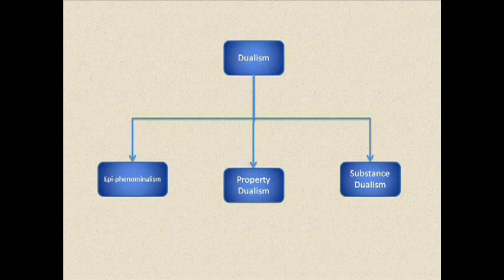Substance dualism is the idea that there's a mental substance, and it's a totally separate thing from matter. Property dualism is a weaker form of substance dualism. It's the idea that the mind is a separate property of the brain, but it's not separable.